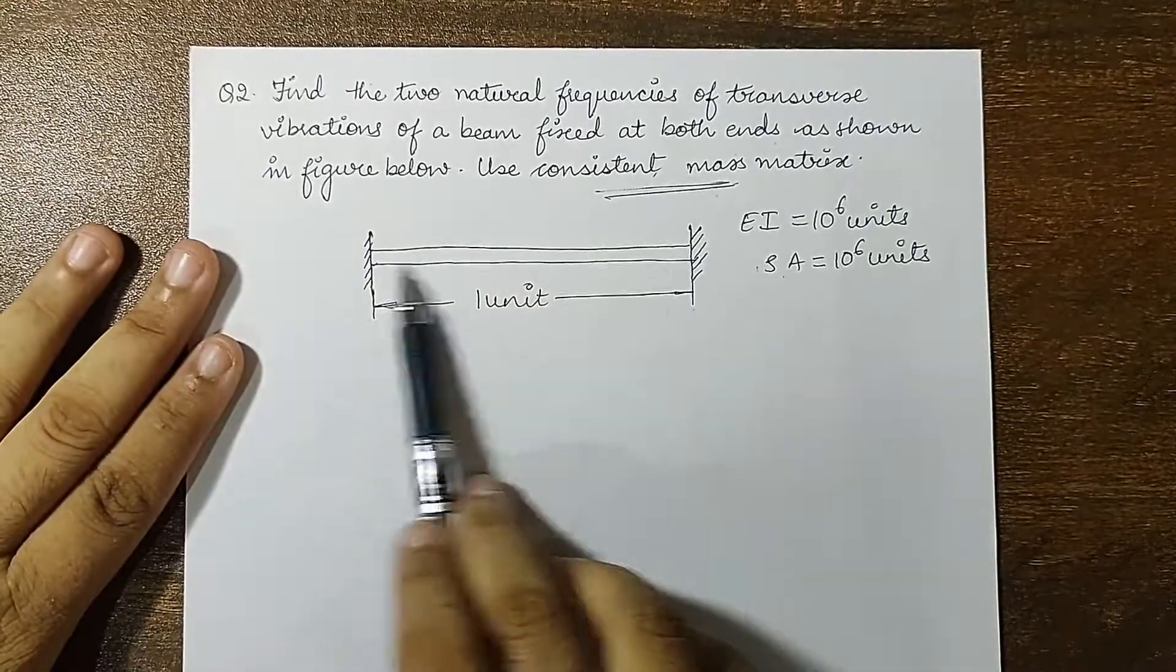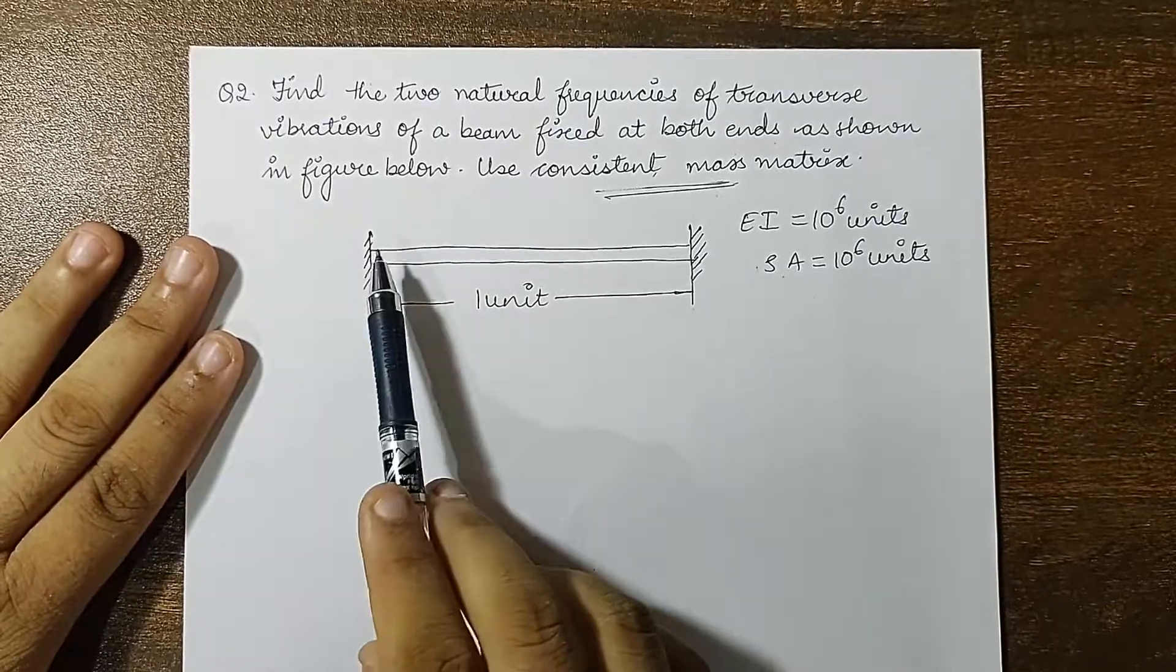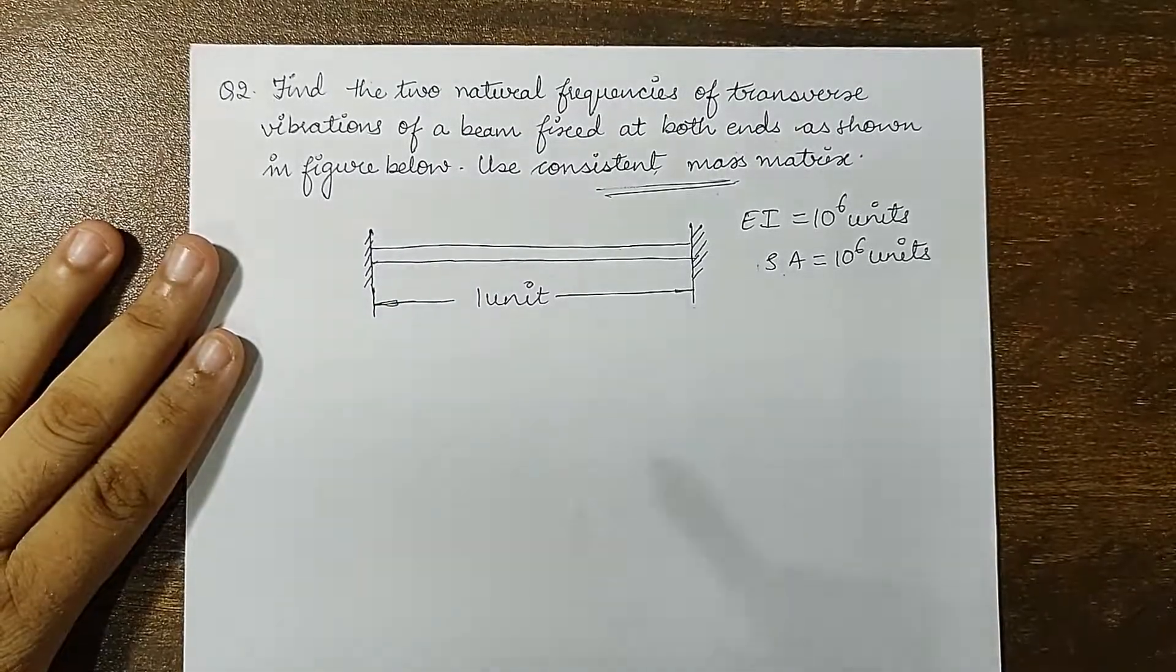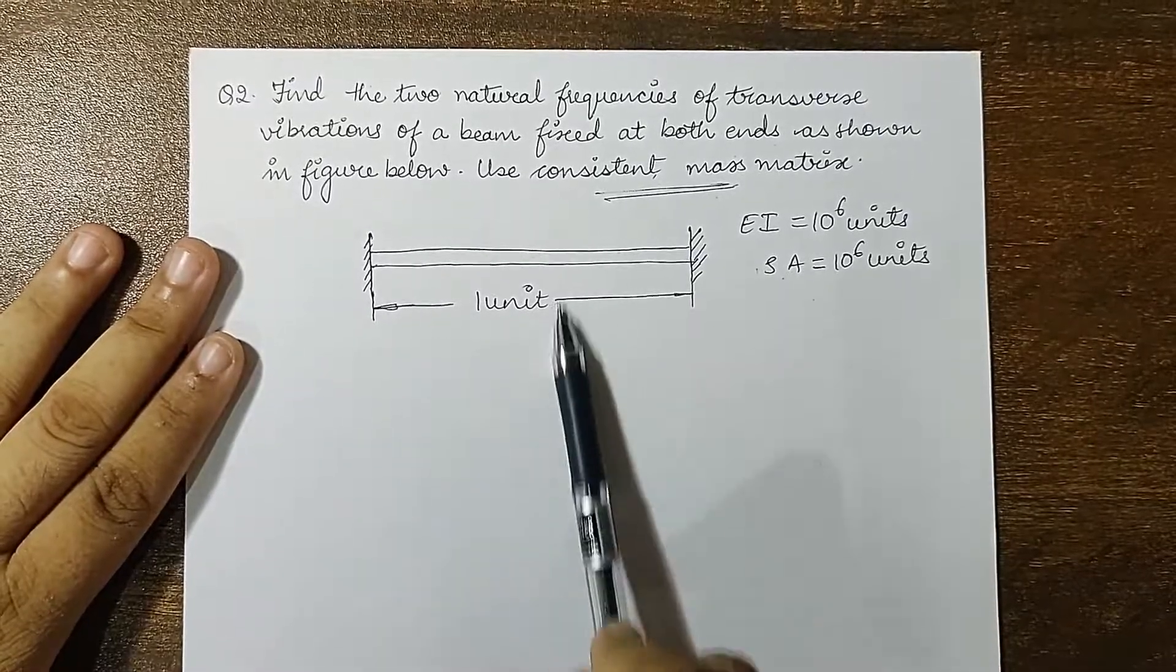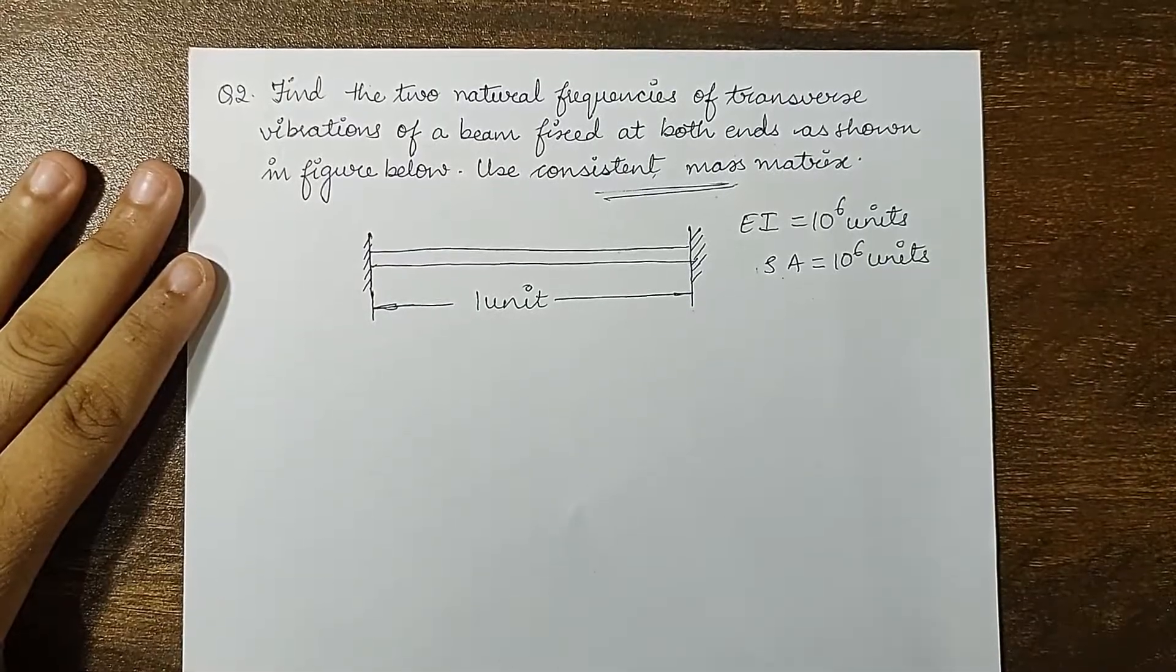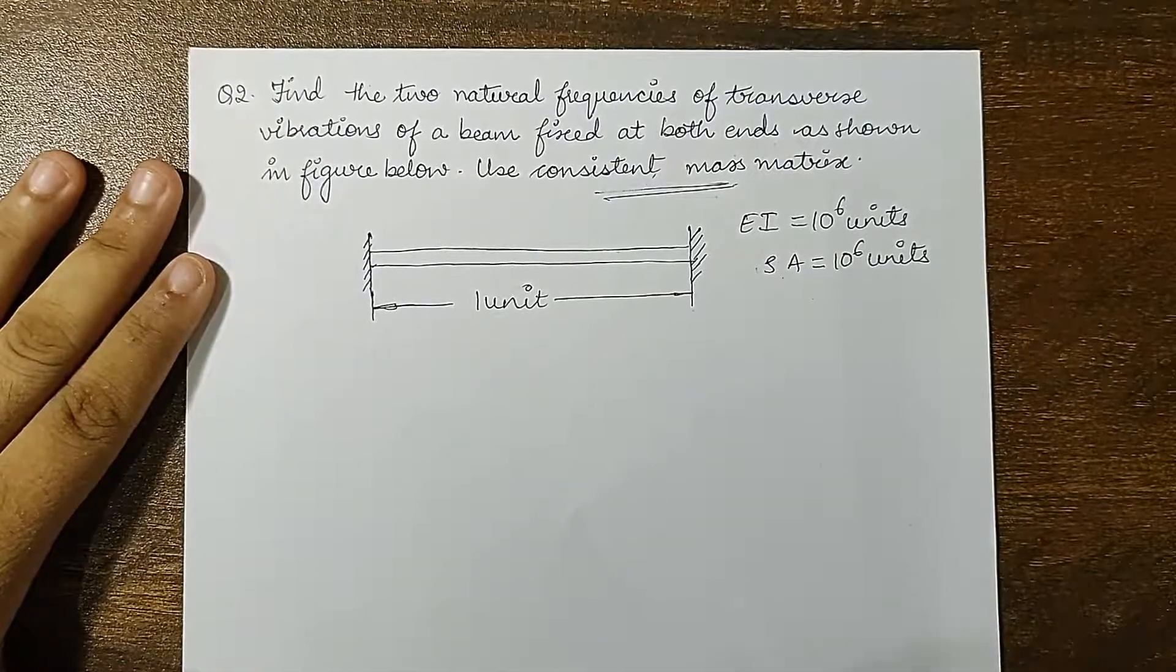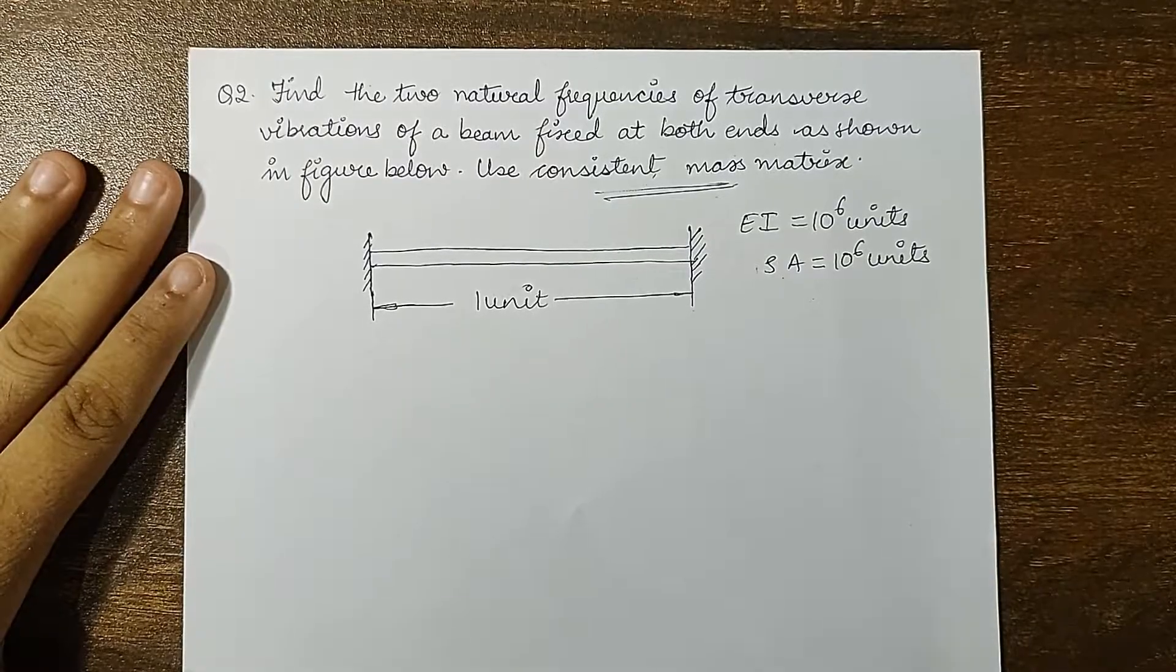The length is given as one unit and it is fixed at both ends. When a beam is fixed at one end, you see axial vibration. But for vibration to take place in the perpendicular direction to the axis of the body, both ends have to be fixed. I have already solved the numerical on axial and transverse vibration using ANSYS. You will get a clear idea of the mode of frequency and it will help you understand the concept very clearly.